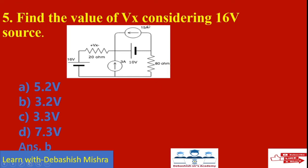Find the value of Vx considering the 16 volt source. There is a 16 volt source, a 3 ampere current source, a 10 volt source, and a 15 ampere source. When you consider the 16 volt source, the 10 volt source will be short circuit, the 3 ampere will be open circuit, and the 15 ampere will be open circuit. So the remaining components are: 16 volt, 20 ohm, and 80 ohm.